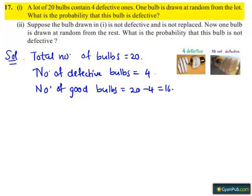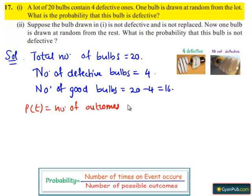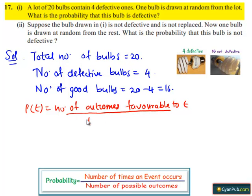We know that the probability of any event P of E equals the number of outcomes favorable to event E, divided by the total number of outcomes.